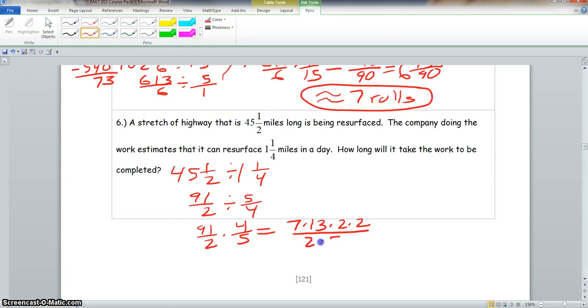Your denominator is 2 times 5. These 2's will simplify out, and 7 times 13 is 91 times 2 is 182 over 5. Now we must take 5 into 182. I'm going to write that over here. 5 goes into 18 three times. 18 minus 15 is 3. Bring down your 2.